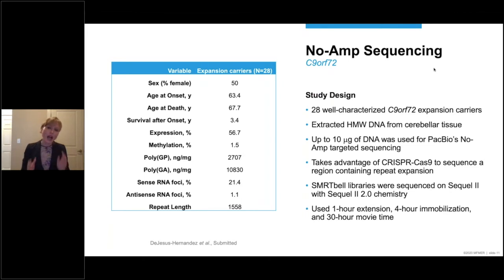We extracted high molecular weight genomic DNA from cerebellar tissue using the Qiagen kit. 10 micrograms was used per individual, one SMRT cell per sample. And we used a one-hour extension, a four-hour immobilization, and a 30-hour movie time. And as I mentioned previously, CRISPR-Cas9 was used to specifically examine the C9ORF72 repeat expansion.